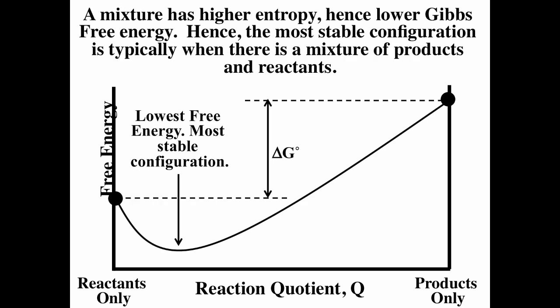ΔG° only compares pure products versus pure reactants, not what's in between. Mixtures have higher entropy and therefore lower Gibbs free energy, since ΔG = ΔH − T·ΔS and larger S drives ΔG down. So typically the minimum Gibbs free energy is somewhere between pure reactants and pure products, and that minimum is the most stable configuration — the equilibrium position.